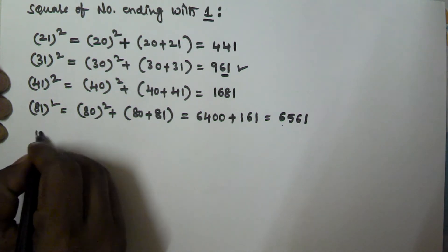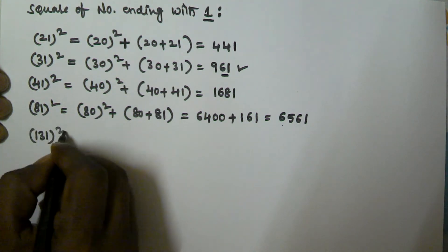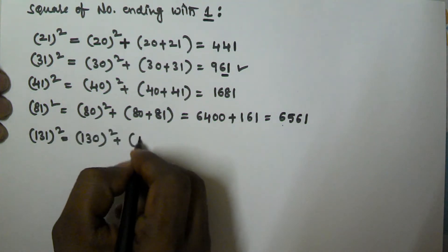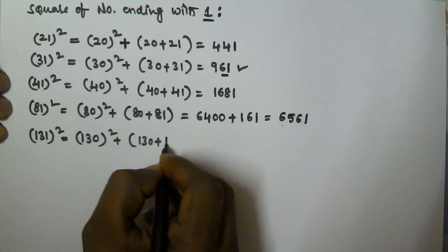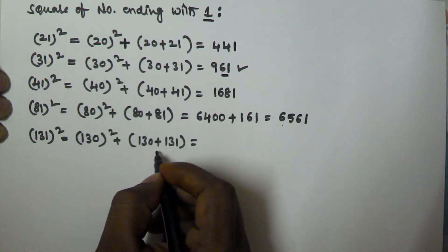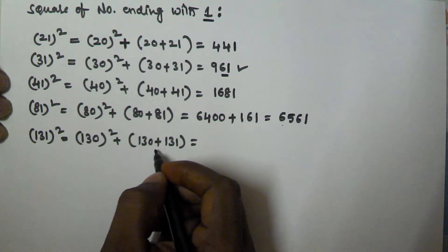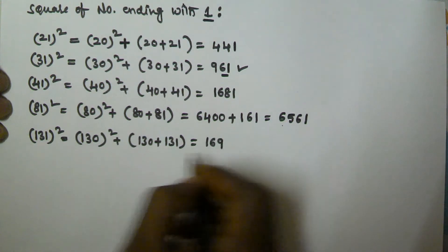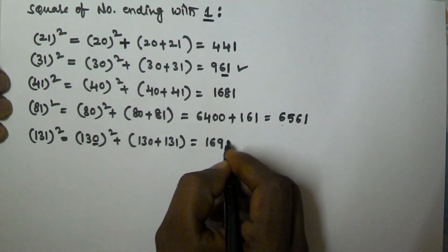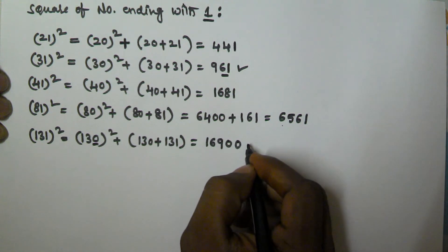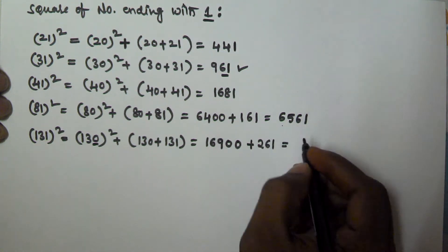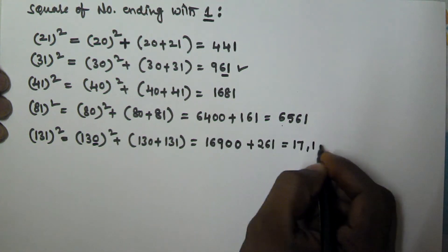So let's take 131 square equivalent to 130 square plus 130 plus 131. So this is going to be 261, it contains 10 that means the square is going to be 2 zeros, so that is 16900 plus 261, so this is equivalent to 17161.